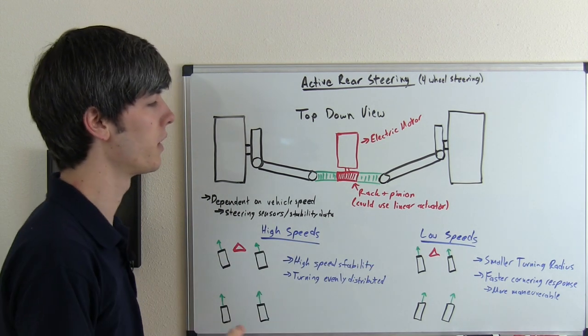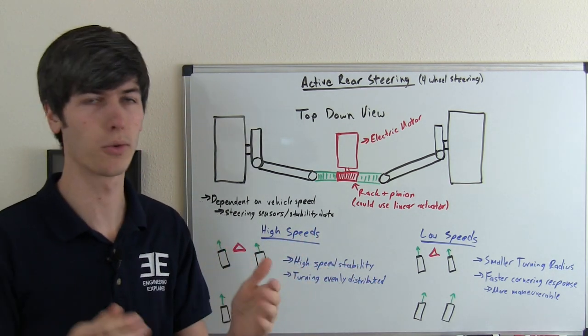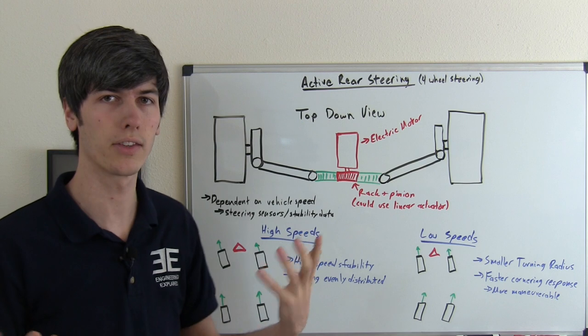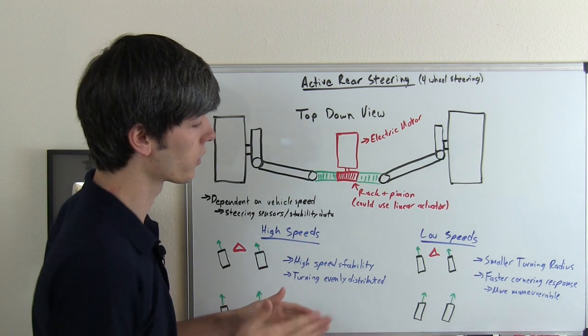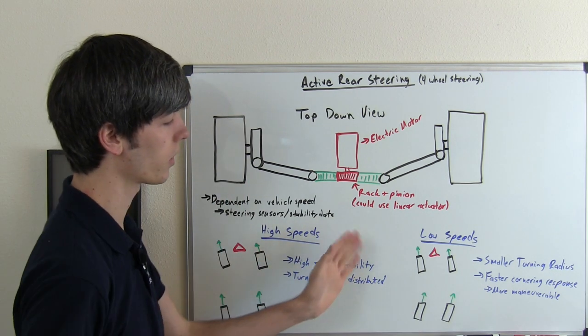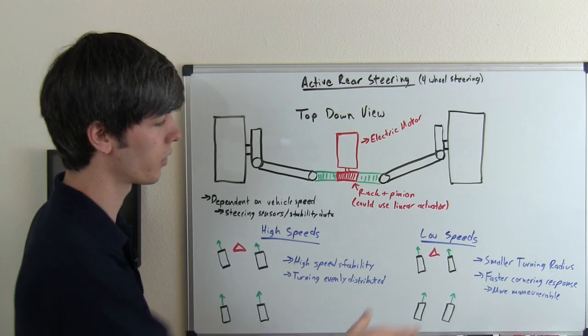This distributes all of the turning forces evenly between the four tires, making it more stable. At lower speeds however, you don't want to do this because you'd just be shifting the vehicle back and forth rather than actually turning. So at lower speeds, like when you're in a parking lot, the rear wheels go the opposite direction of the front wheels. If you're doing a left-hand turn, the front wheels turn towards the left and the rear wheels turn towards the right.